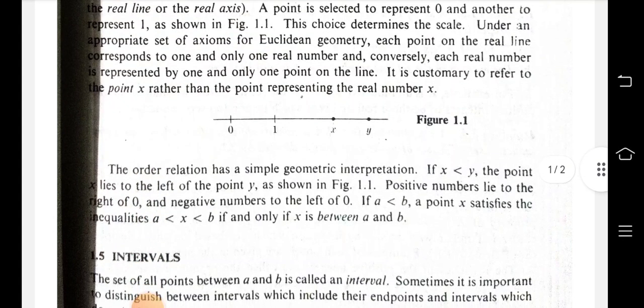It is customary to refer to the point x rather than the point representing the real number x. The order relation has a simple geometric interpretation: if x is less than y, then the point x lies to the left of the point y. If a is less than b, then the point x satisfies the inequalities and there are intervals.